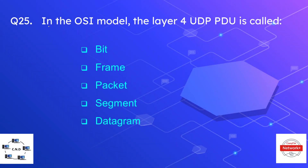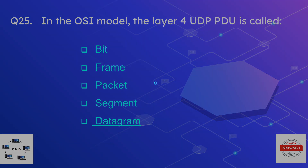Question number twenty-five is: in the OSI model, the layer four UDP PDU is called — bit, frame, packet, segment, or datagram? The correct option is datagram. The segment is the layer four TCP PDU, while the datagram is the layer four UDP PDU.